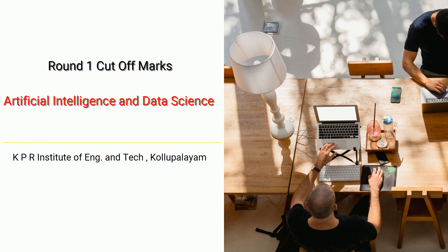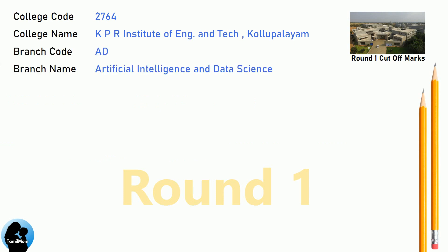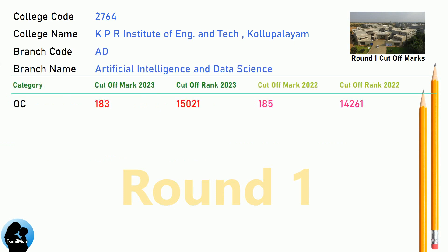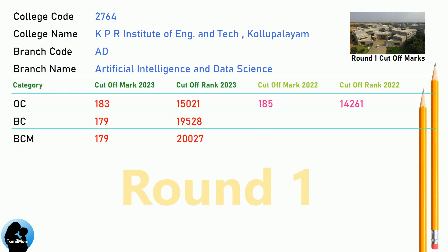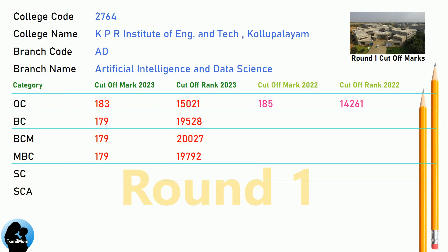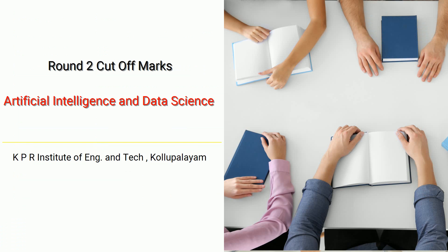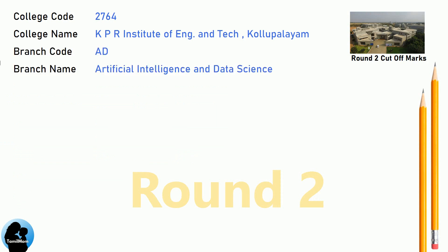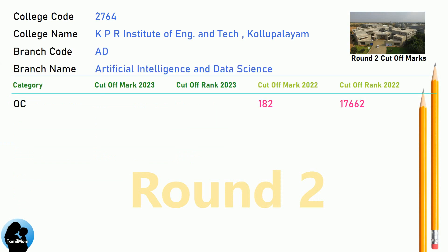DNA Round 1 Cut-off for KPR Institute of Engineering and Technology in Artificial Intelligence and Data Science. DNA Round 2 Cut-off for KPR Institute of Engineering and Technology in Artificial Intelligence and Data Science.